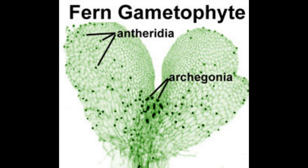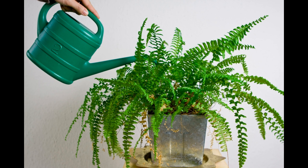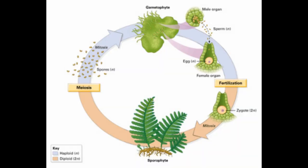The archegonia is where the eggs come from, and they are only produced one at a time. The antheridium is the male gametangia that produces sperm. When water touches the female organ, it opens up to showcase the eggs.